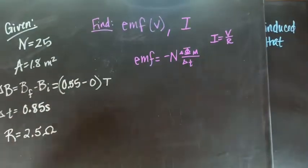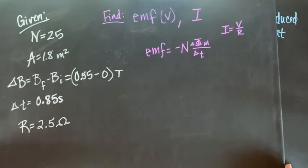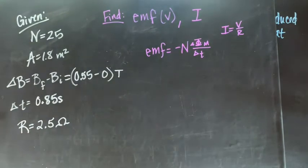That brings us to number nine. A coil with 25 turns of wires wrapped around a hollow tube with an area of 1.8 meters squared. Each turn has the same area as the tube. A uniform magnetic field is applied at a right angle to the plane of the coil. If the field increases uniformly from 0 tesla to 0.55 tesla in 0.85 seconds, find the magnitude of the induced EMF in the coil. If the resistance in the coil is 2.5 ohms, find the magnitude of the induced current.